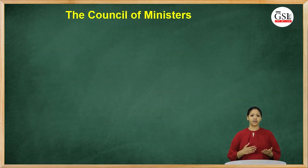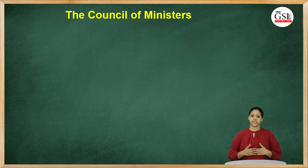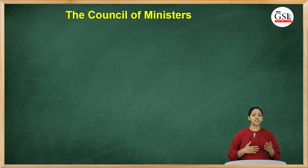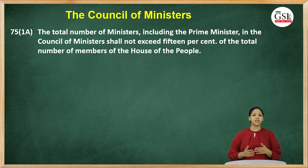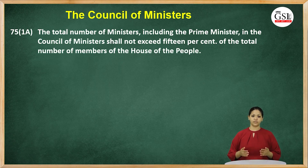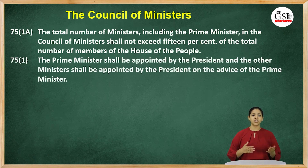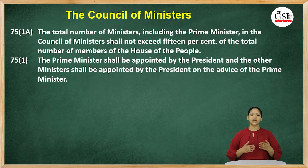Though formally all executive power is vested with the president, the actual power is vested with the Council of Ministers, which is headed by the leader of the majority party, that is, the prime minister. The strength of the Council of Ministers shall not exceed 15% of the total number of members in the House of People. The prime minister shall be appointed by the president after a new House of People is formed, and the newly appointed prime minister shall advise the president as to who will be in the Council of Ministers.